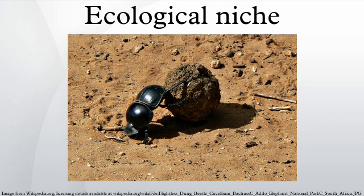Grinnellian niche: the ecological meaning of niche comes from the meaning of niche as a recess in a wall for a statue, which itself is probably derived from the middle French word 'niche', meaning to nest. The term was coined by the naturalist Joseph Grinnell in 1917, in his paper 'The Niche Relationships of the California Thrasher.' The Grinnellian niche concept embodies the idea that the niche of a species is determined by the habitat in which it lives and its accompanying behavioral adaptations. In other words, the niche is the sum of the habitat requirements and behaviors that allow a species to persist and produce offspring.